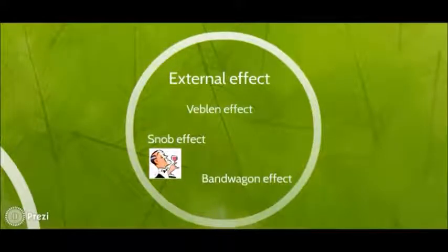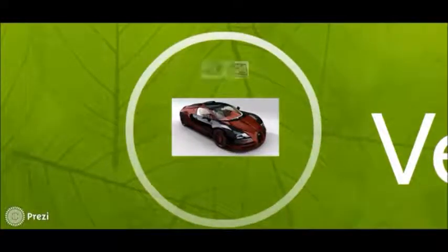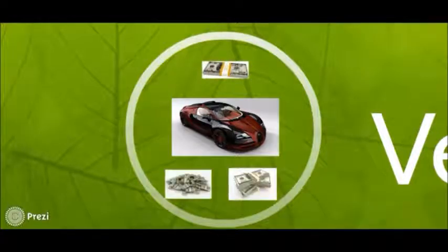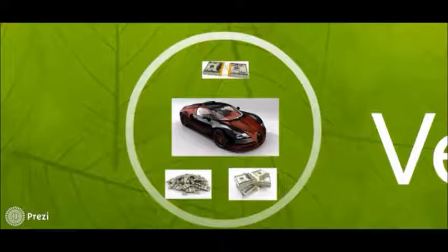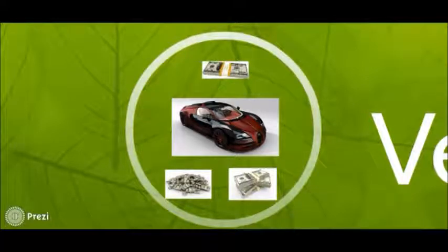Let's start with the Veblen effect. Veblen effects are said to exist when consumers exhibit a willingness to pay a higher price for a functionally equivalent good, arising from the desire to signal wealth. Hence, utility is derived not from the price of the commodity, but rather the status derived from consumption of that certain commodity. Basically, its aim is to have what others cannot have.